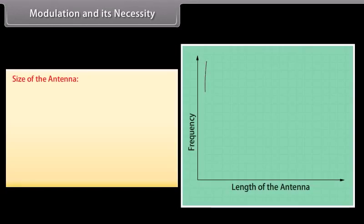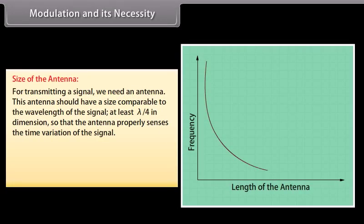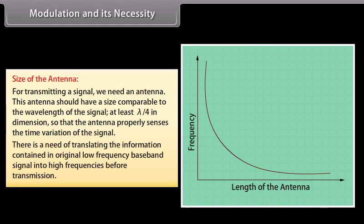For transmitting a signal, we need an antenna with a size comparable to the wavelength of the signal — at least λ/4 in dimension — so that the antenna properly senses the time variation of the signal. For an EM wave of frequency 30 kHz, the wavelength λ is 10 km. It is not possible to construct such a long antenna. Therefore, there is a need to translate the information in the original low frequency baseband signal into high frequencies before transmission.